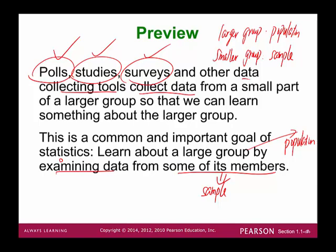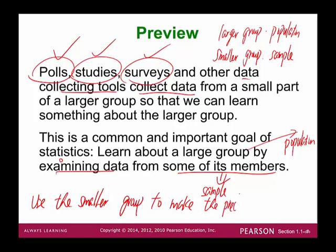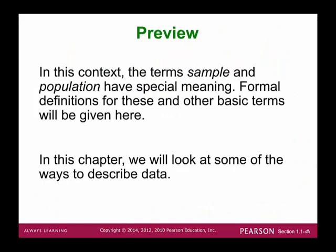Basically, we use the smaller group — the sample — to make predictions about the larger group, which is the population. That is the most fundamental objective of statistics. The sample comes from the population; the sample is a subset of the population.